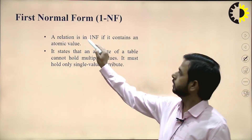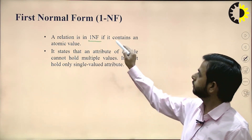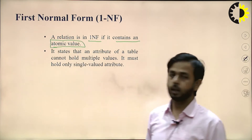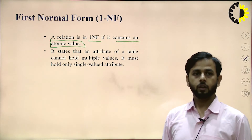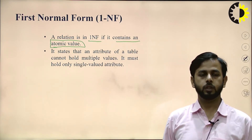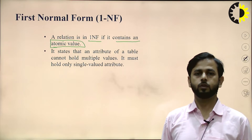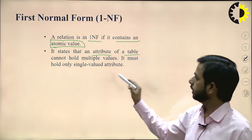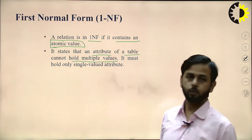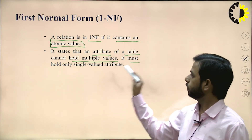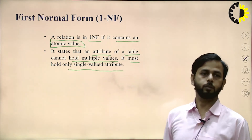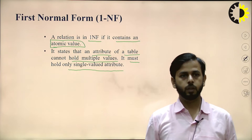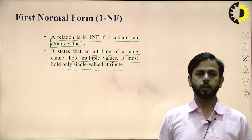A relation is in First Normal Form if it contains atomic values — meaning corresponding to one attribute in one cell there is only one value. It states that an attribute of a table cannot hold multiple values; it must hold only single-valued attributes. In First Normal Form, it contains only atomic and single-valued attributes.